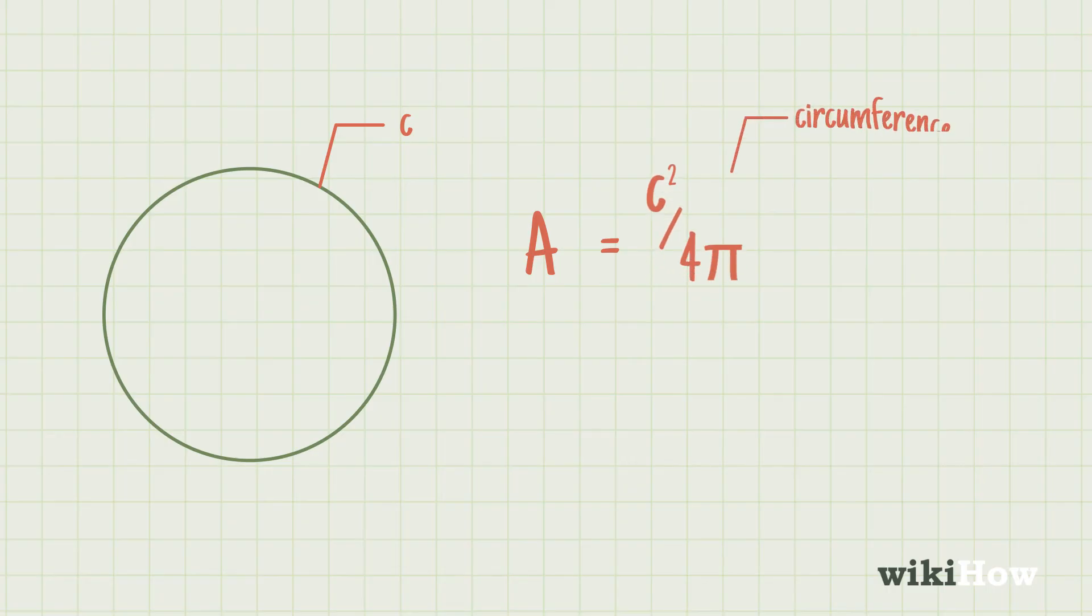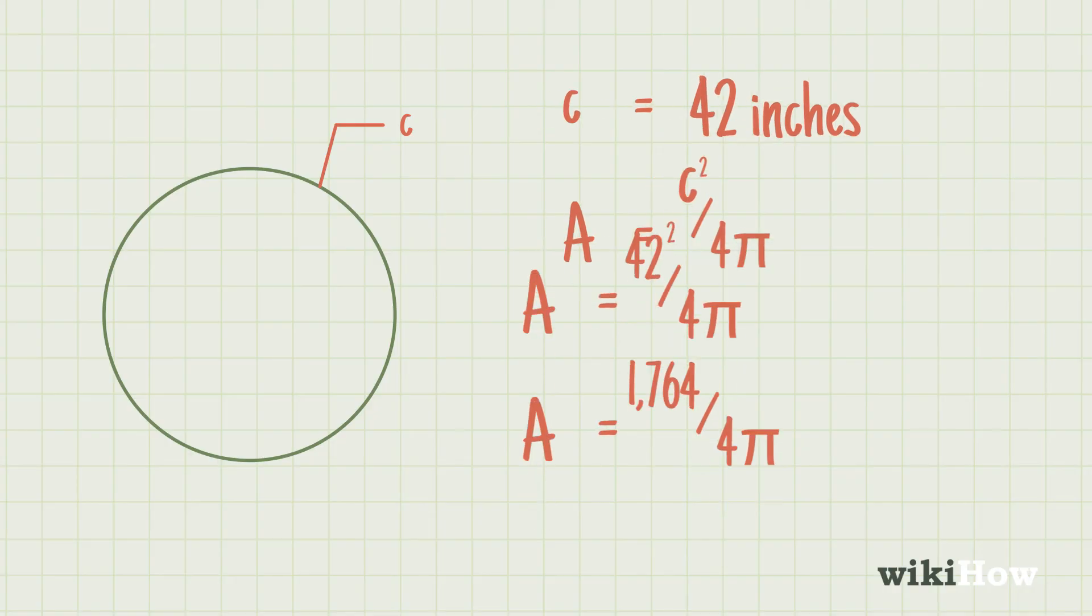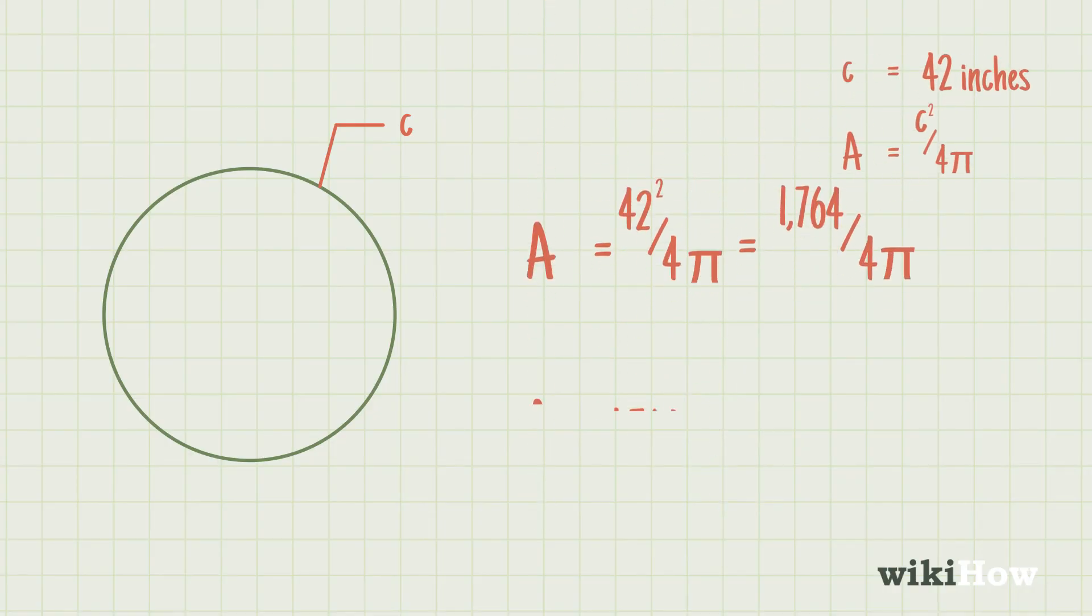For example, if the circumference is 42 inches, first you would square 42 and get 1764. Then you would multiply 4 by pi and get 12.57.